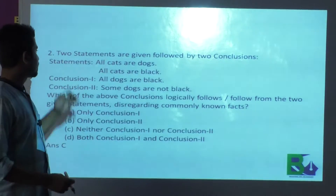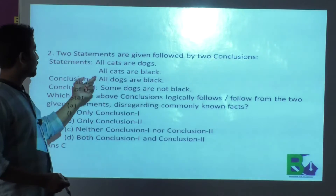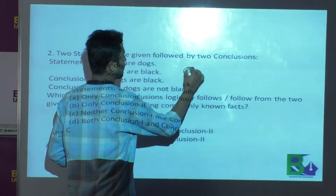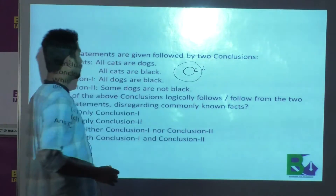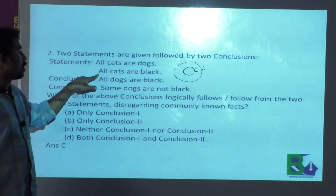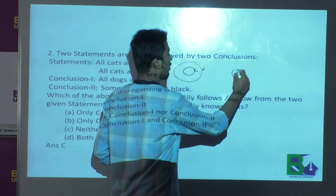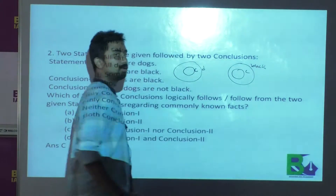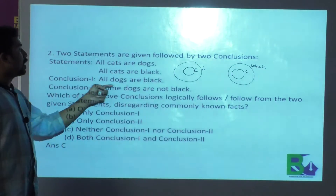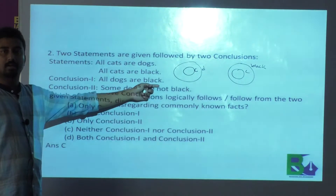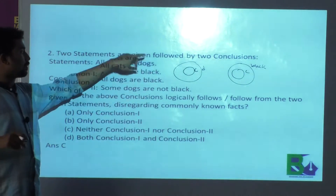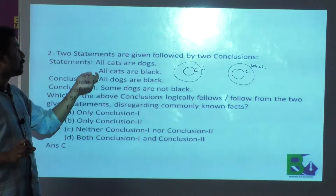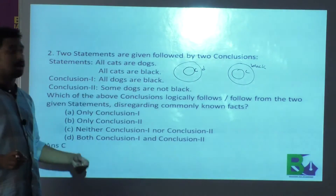This is a question from statement and conclusion. Let us look at the statements. All cats are dogs — it means if it is a cat, then it is a dog. The second statement: all cats are black — it means cats and black overlap. Now let us see the conclusion: all dogs are black. From these two statements, you cannot determine any particular conclusion about the relationship between dog and black.